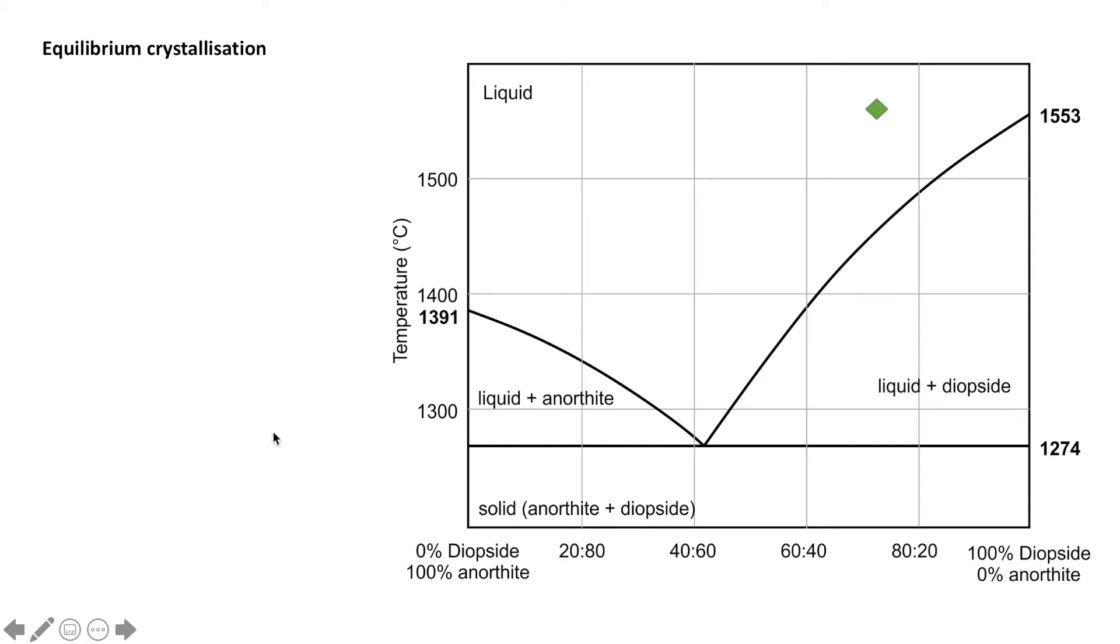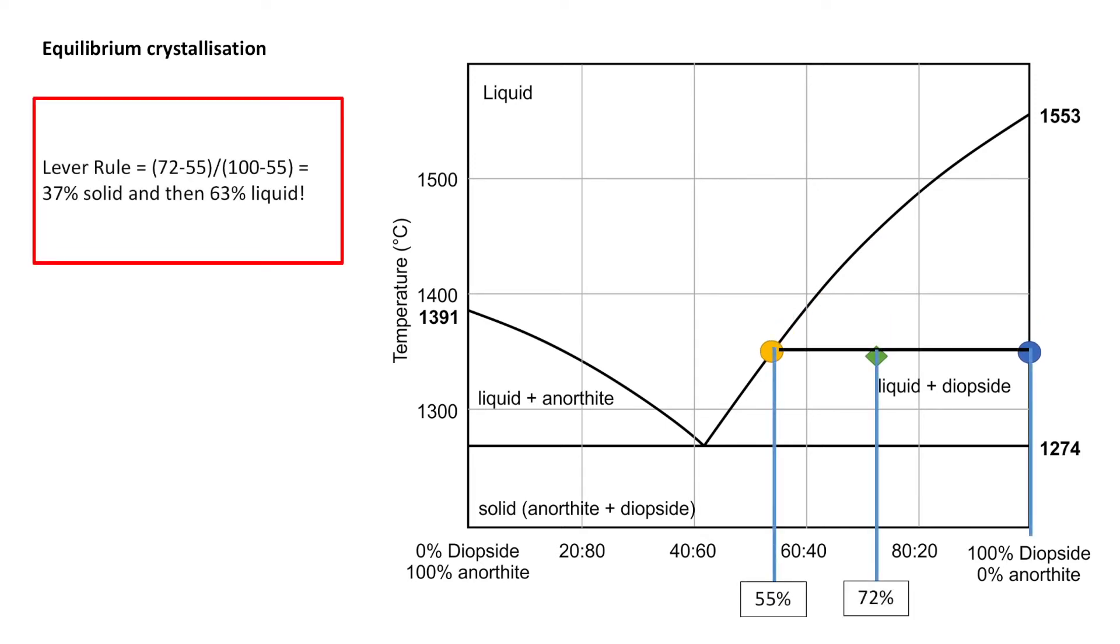So if we start with a system of this sort of composition, looking at maybe around 70%, 75% diopside, we're going to cool the system and we're going to drop it onto the liquidus. At the liquidus, during equilibrium crystallization, we're going to generate our liquid and our solid component, in this case diopside, and we're going to evolve down the system. Before I just pause it there, let's apply our lever principle.